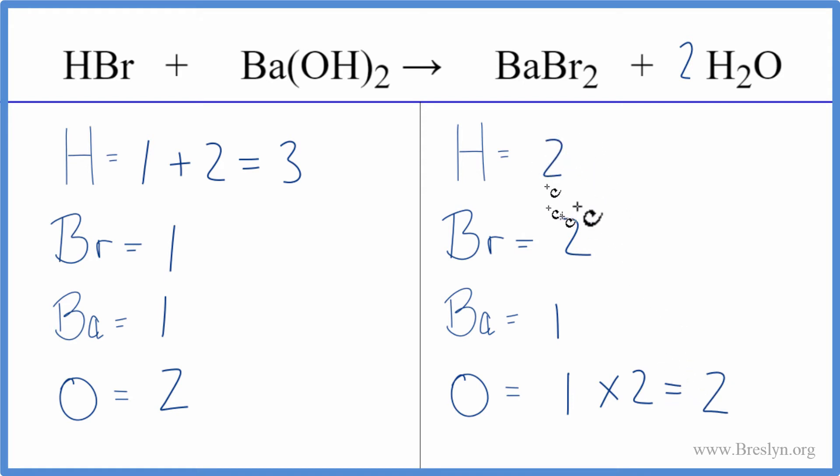And then our hydrogens, we have two times two. That gives us four hydrogens. So the bromines and the hydrogens, those aren't balanced.